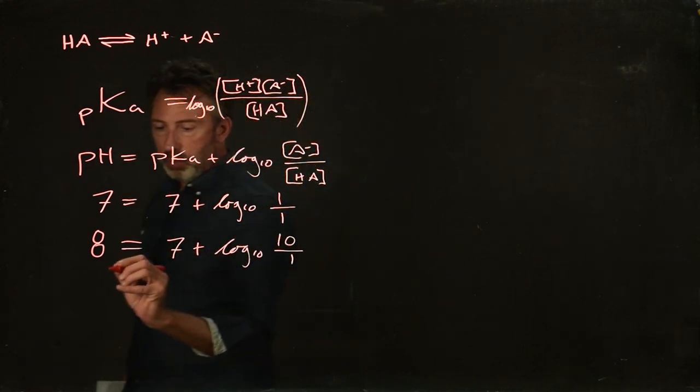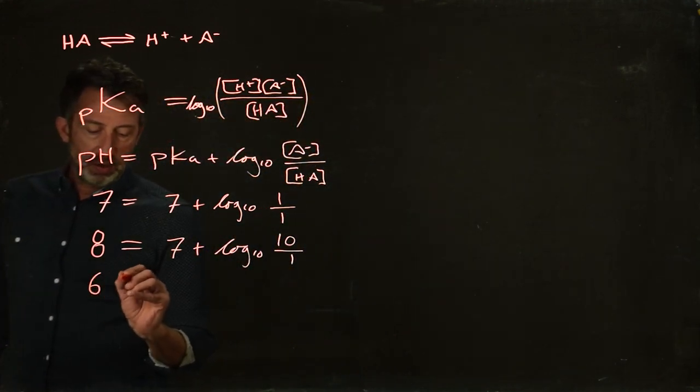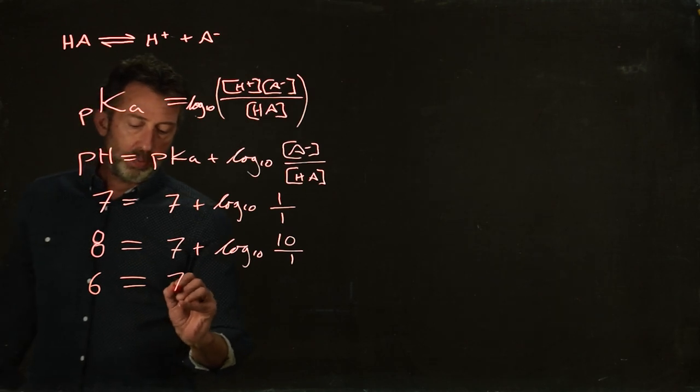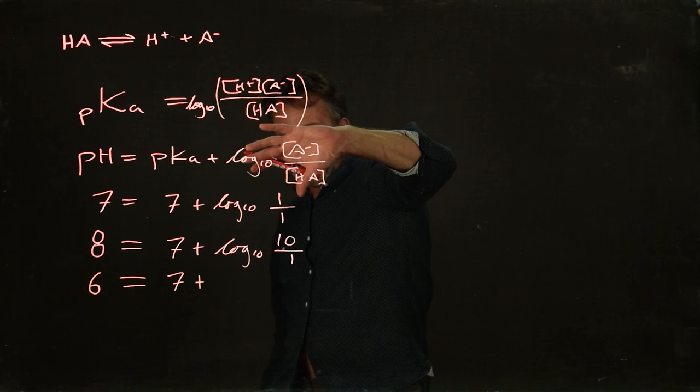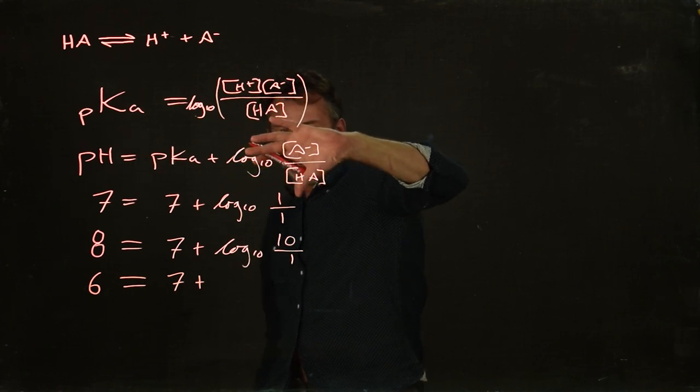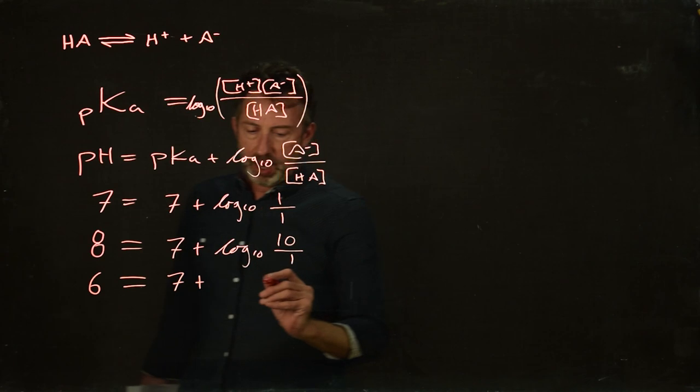On the other hand, let's look at what happens if we drop down to 6. So if the pH was 6 and the pKa was 7, well, that's going to mean that this log 10 term here is going to be equal to minus 1, 6 equals 7 minus 1.